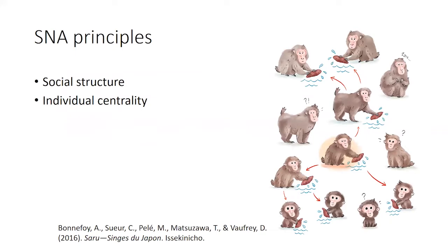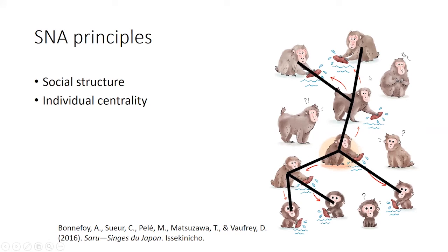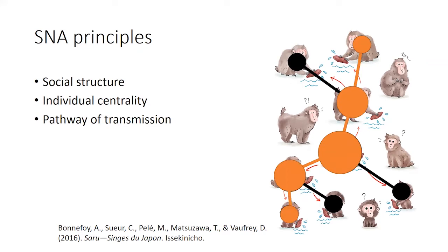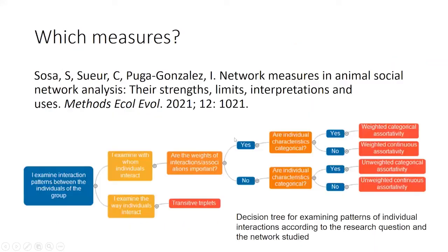When you are going to conduct SNA, you need to understand what social network analysis actually measures. It allows you to measure the social structure of a group — for instance, calculating density, individual centrality (how central each individual is in the group), and pathways of transmission (if one individual learns something, you can see which pathway others follow to learn the same behavior). We published a paper in Methods in Ecology and Evolution with a decision tree to help you use the best measure.